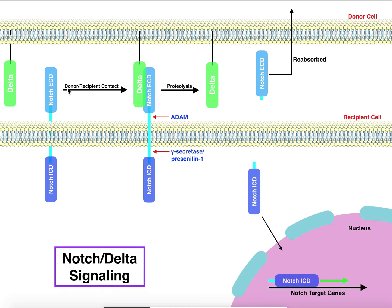Eventually, the donor and recipient cells make physical contact, meaning the Delta protein from the donor cell and the Notch extracellular domain of the recipient cell come into contact. As you've probably learned in biochemistry and cell biology, when two proteins come in contact, it induces conformational changes in both proteins. Specifically, we're going to talk about conformational changes in Notch.